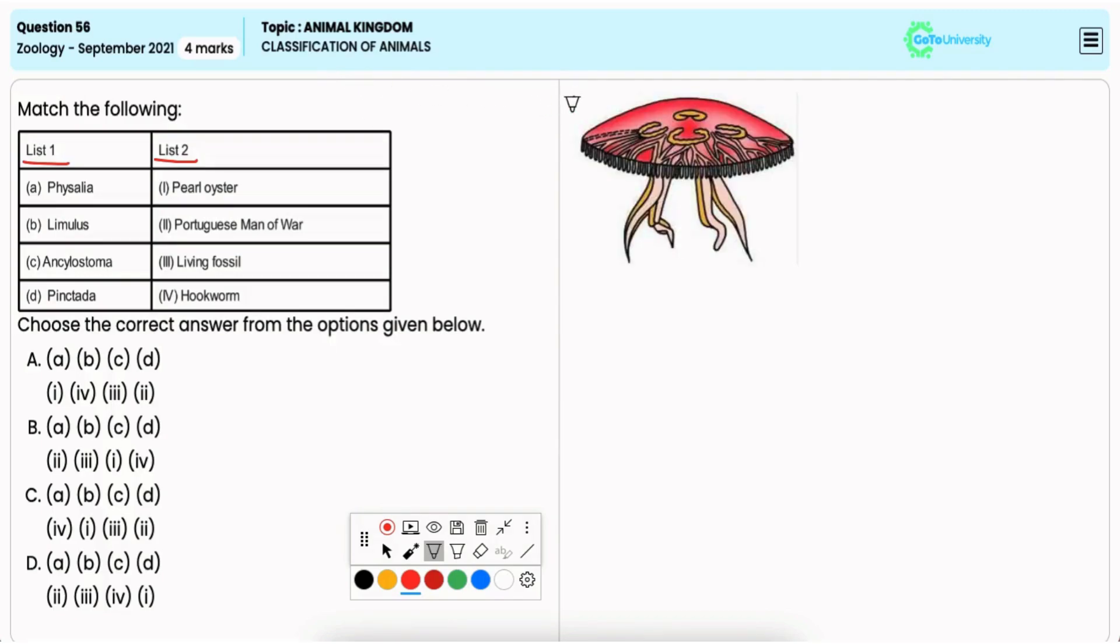The Physalia, which is commonly known as Portuguese man of war because of its appearance, belongs to the phylum Cnidaria. Thus A matches with 2.